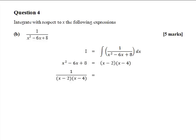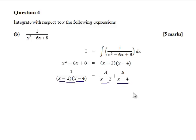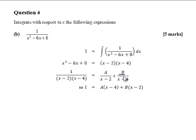We try to find two constants A and B to split the fraction into two separate parts: A over (x minus 2) plus B over (x minus 4). Multiplying A over (x minus 2) by (x minus 4) and B over (x minus 4) by (x minus 2) gives both sides the same denominator. The denominators cancel, so we get 1 equals A times (x minus 4) plus B times (x minus 2).